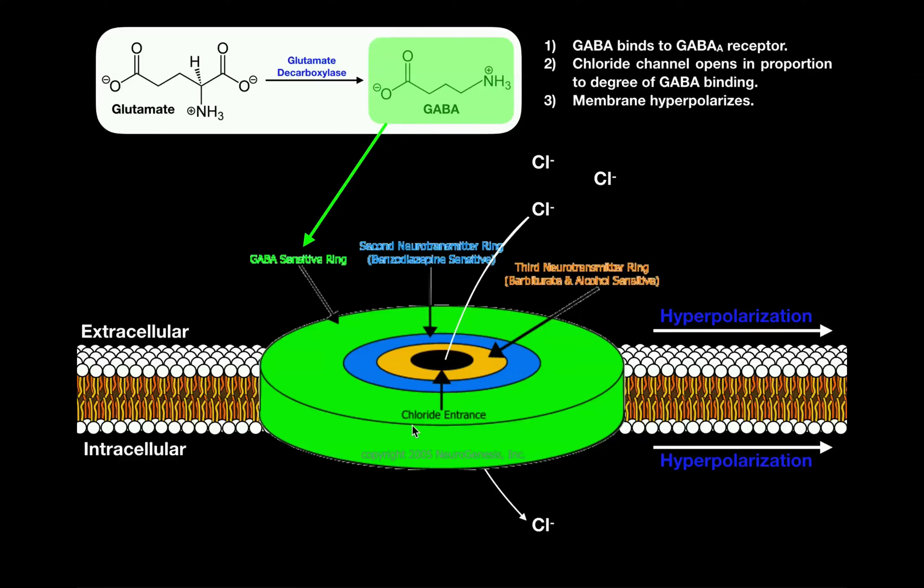This green part right here is the GABA-sensitive part. GABA will be released by a presynaptic neuron, diffuse across the synaptic cleft, and bind to the GABA binding sites. There's actually multiple GABA binding sites, not just one. There's many on each GABA-A receptor.